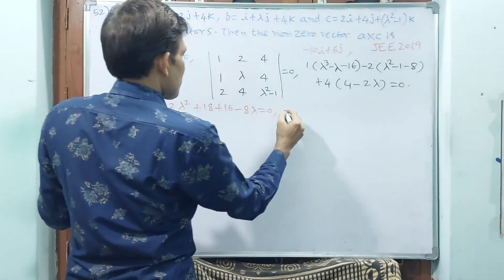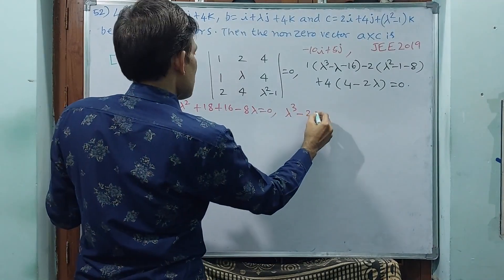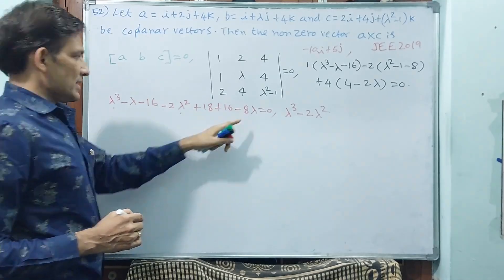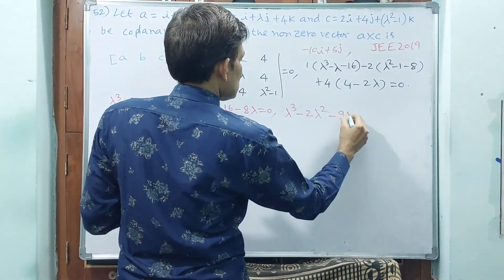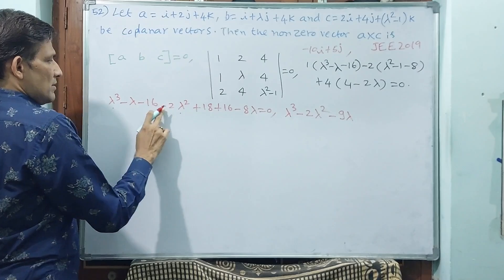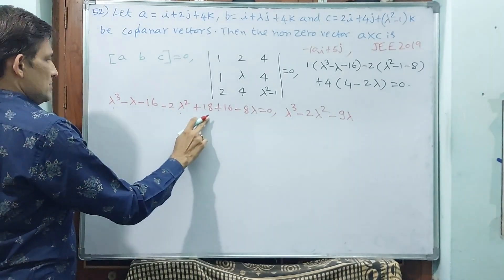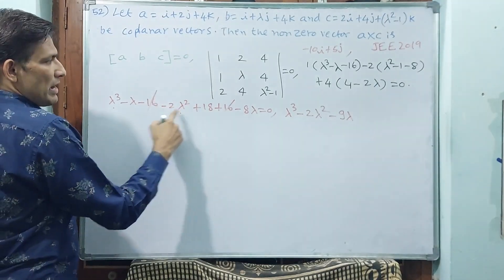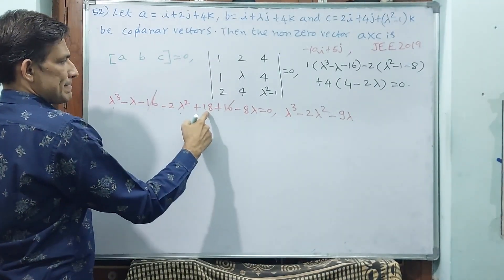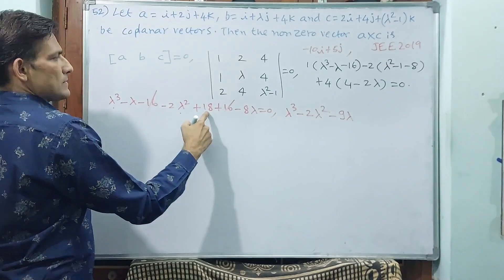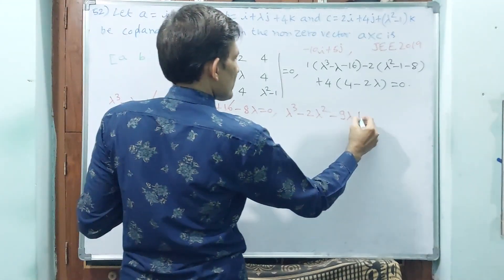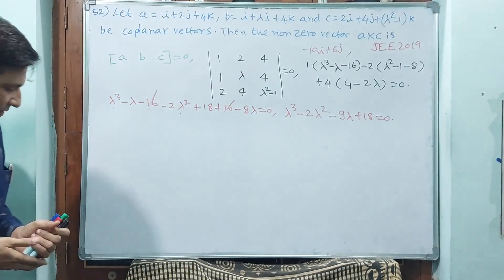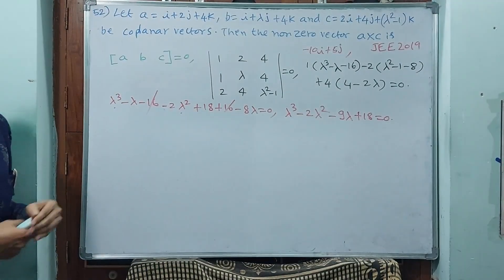Collecting terms: lambda cubed minus 2 lambda squared, minus 9 lambda, and minus 16 plus 16 cancel out, giving lambda cubed minus 2 lambda squared minus 9 lambda plus 18 equals 0. Since this is not a quadratic equation, we need to use trial and error to find a root.